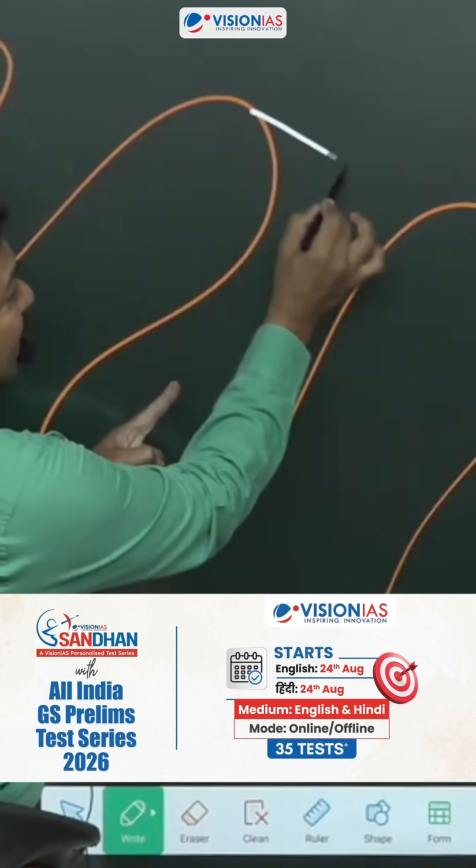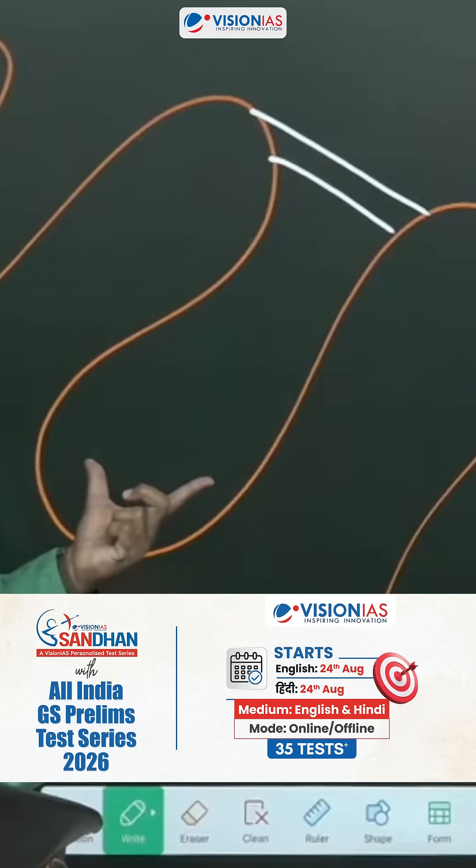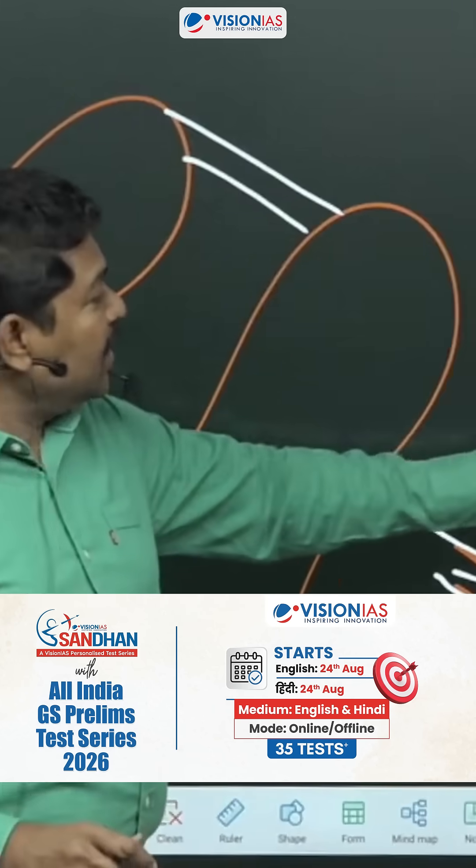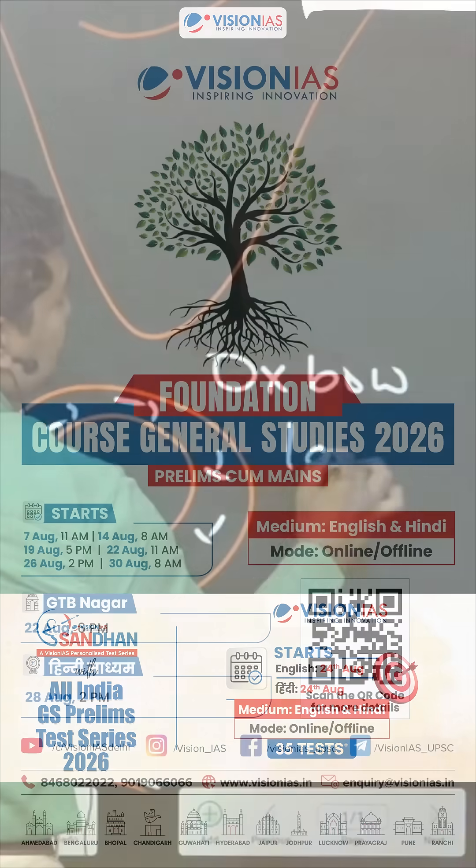What happens to the water that is already there? It remains as stagnant water and forms a freshwater lake. Such freshwater lakes are called oxbow lakes.